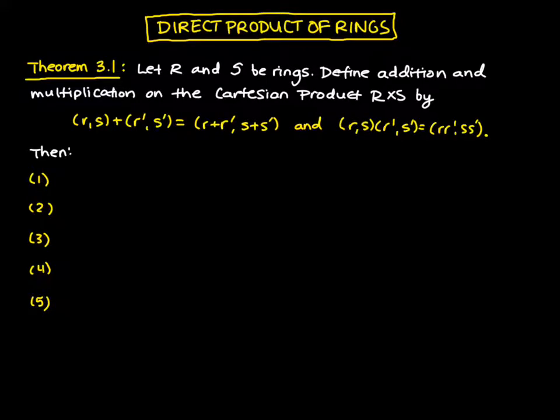Now we're going to introduce the direct product of rings. So let R and S be rings, and we're going to define addition and multiplication on the Cartesian product R times S by the following.